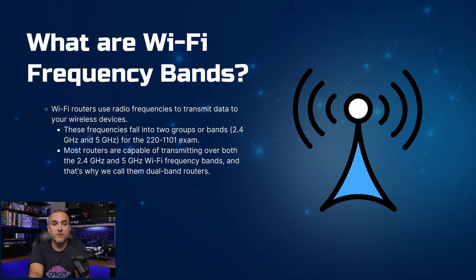Let's start off by answering the question: what are Wi-Fi frequency bands? Wi-Fi routers use radio frequencies to send data to your wireless devices. These frequencies are divided into two bands — 2.4 gigahertz and 5 gigahertz — and you'll need to know about both for the 220-1101 exam. The majority of routers can transmit on both bands, earning them the title of dual-band routers.